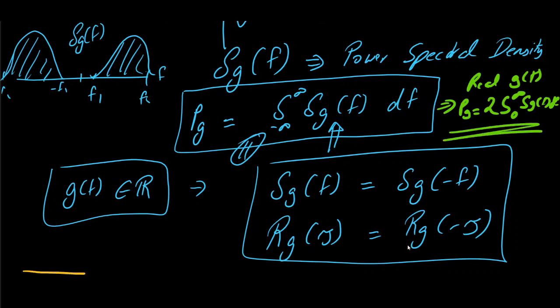Let us move towards one example of a random signal, random data signal, to understand the concept of power spectral density in an application scenario.